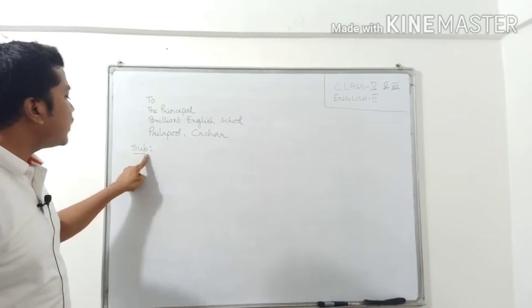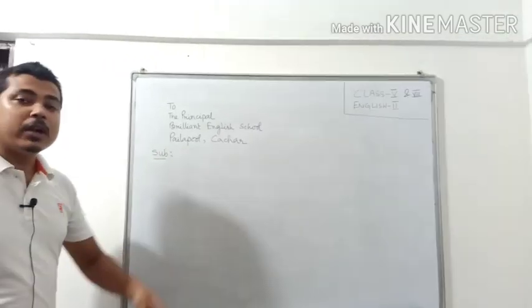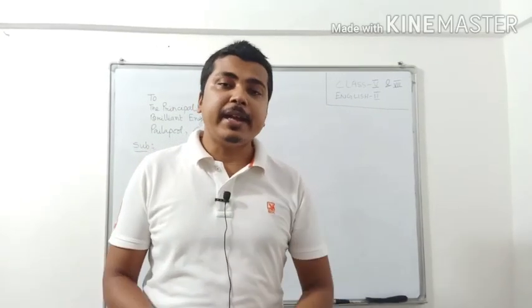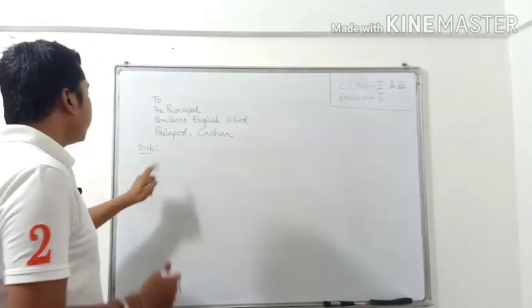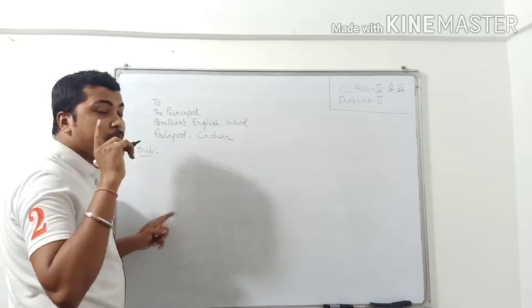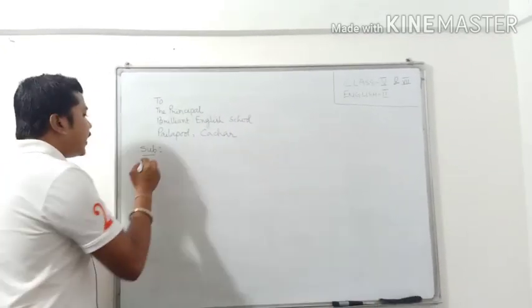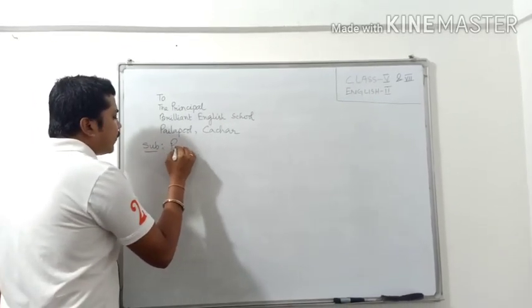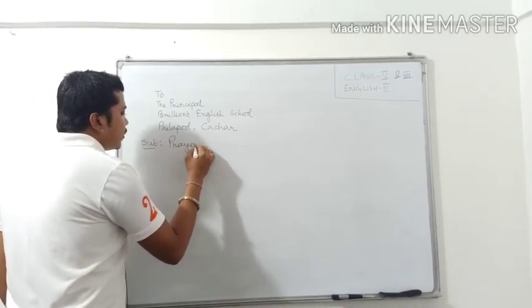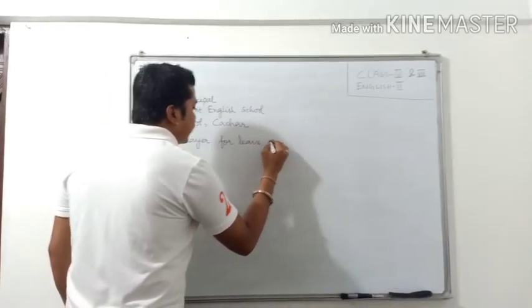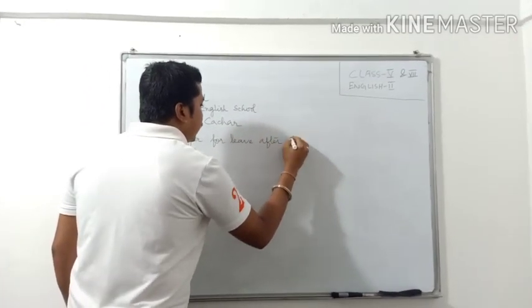So what will be our subject? Suppose as for example, you want to go home because you are not feeling well, you have headache. So prayer for leave, that means you want to take leave after fourth period. This is your main subject. So how will you write it? Prayer for leave, prayer for leave after fourth period.